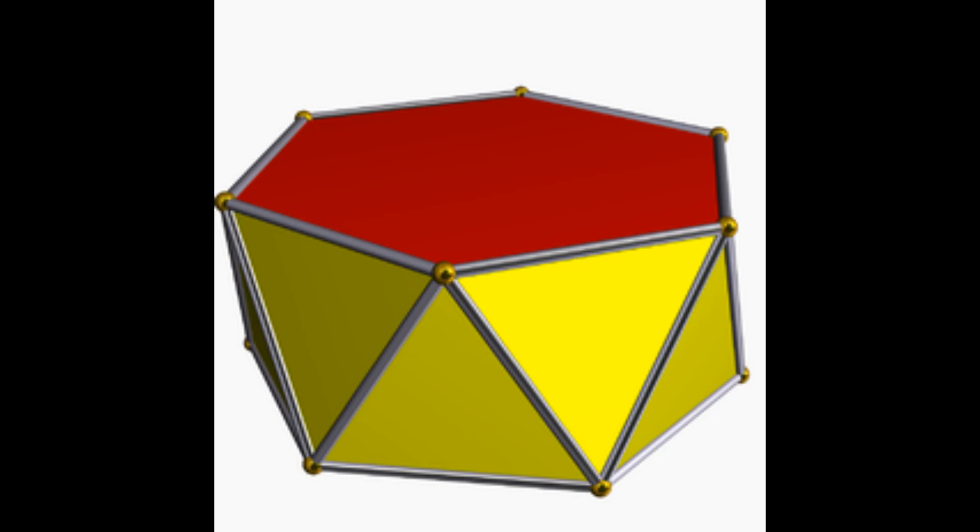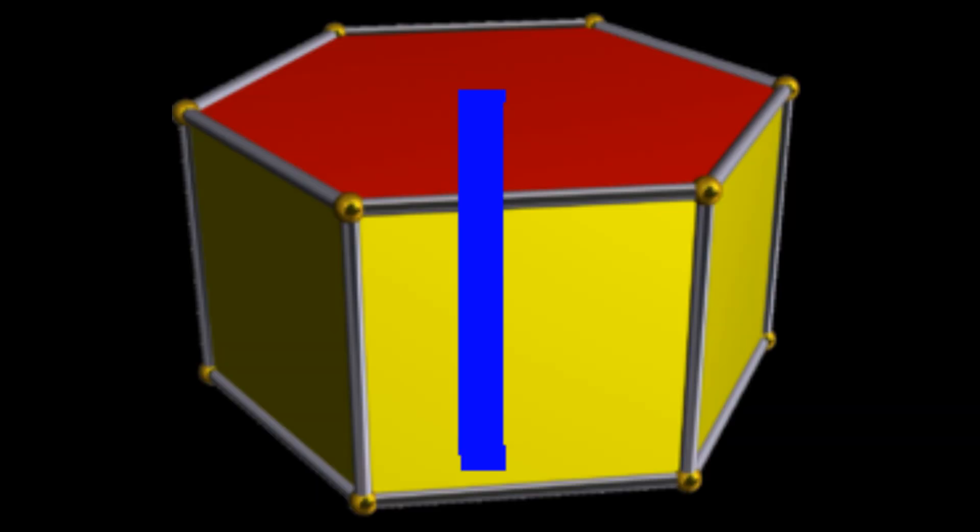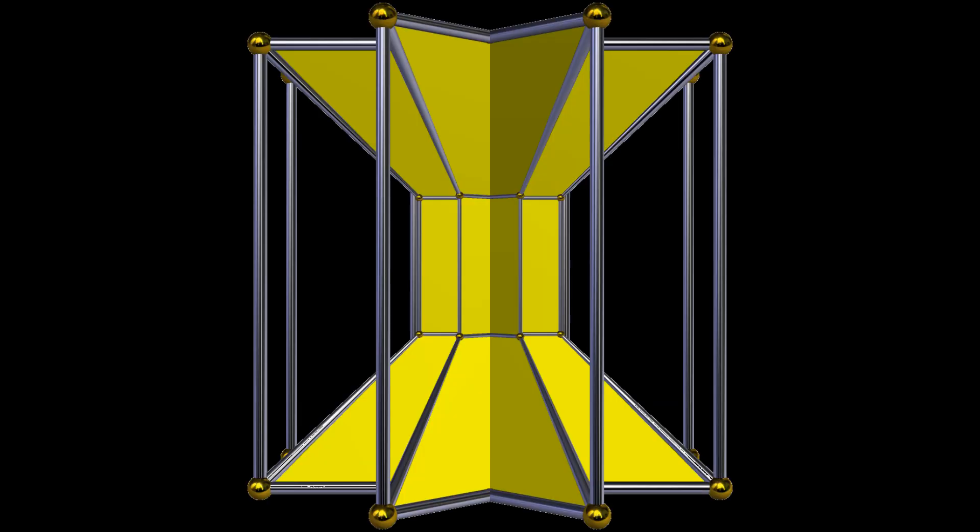First of all, there are two infinite families of these, sort of like the 3D prisms and anti-prisms. One infinite category contains the duoprisms. It's actually possible in 4D to take one polygon in one 2D plane and copy it to every point on another polygon in a perpendicular 2D plane, sort of like how a 3D prism is copying a polygon on a line segment. There are an infinite number of these for every pair of polygons, including star polygons. The other category is just the prisms of the 3D anti-prisms.